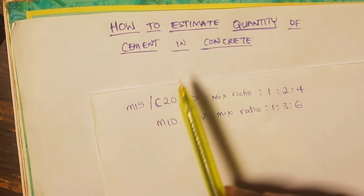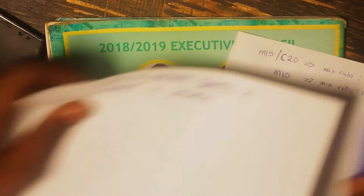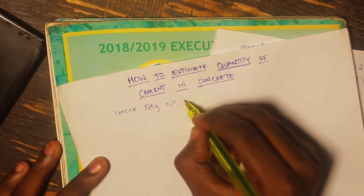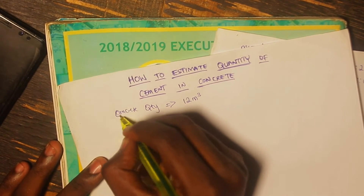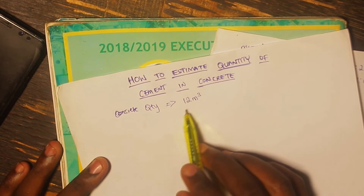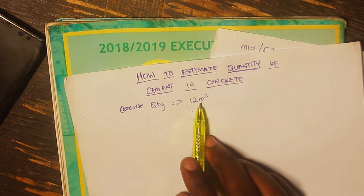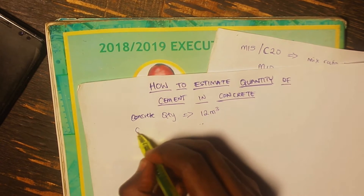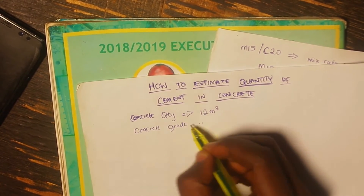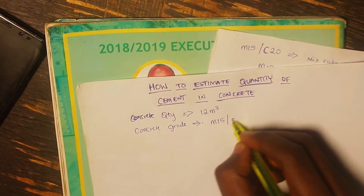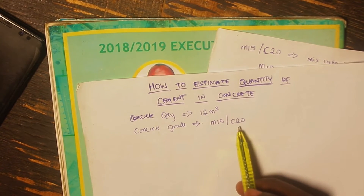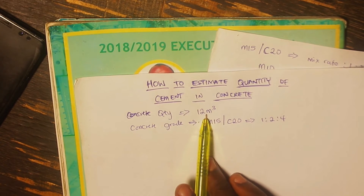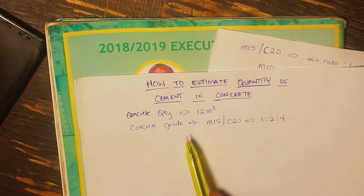That is the first step you need to take in carrying out your calculation. Let's assume that when I look at my bill of quantities, the quantity of concrete is 12 cubic meters — that is the concrete quantity stated in the bill of quantities. What we want to know is the quantity of cement that can be used to carry out the concrete casting for 12 cubic meters of concrete. In this case, the concrete grade is M15. M15 and C20 have the same mix ratio, and their mix ratio is 1:2:4. I know the quantity stated in my bill of quantities and I know my concrete grade as 1:2:4.